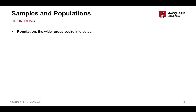A population is a wider, broader group than a sample. It's generally the people or the observations that we're interested in finding out something about. Research questions are always about a population. If I'm interested in understanding the effect of psychological therapy on depression, my population is Australians with depression, or everybody in the world who has depression. That's the wider group that the research question applies to.